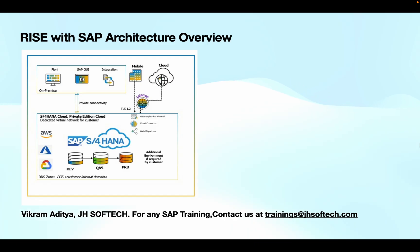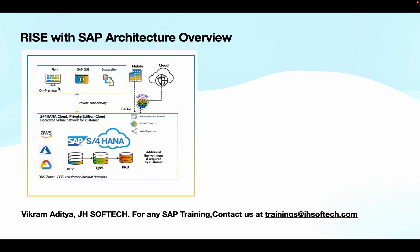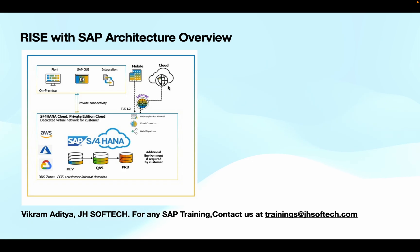For the Rise with SAP architecture overview, let's look at the S4 HANA cloud environment. The database can be hosted on Google Cloud Platform, AWS, or Azure, or on SAP's own cloud. You have development, quality, and production systems, along with a dedicated customer network for private cloud editions. Connectivity supports on-premise SAP GUI, Fiori (both online and downloadable), and integration to mobile devices or other cloud applications via private connectivity or the internet.